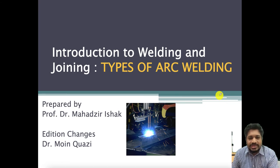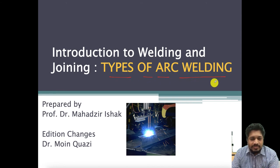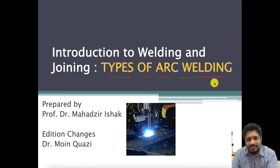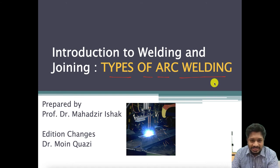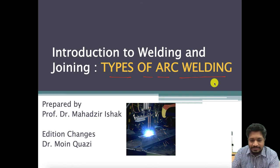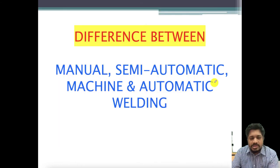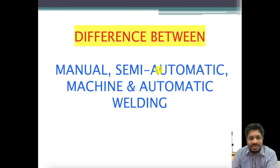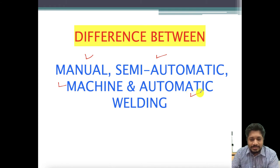Hello students. Today we are going to start a new topic: types of arc welding. We will discuss the different types of fusion arc welding available, and later on we will also discuss the types of specialized welding processes categorized by AWS, the American Welding Society. Before we move on to the types of welding, it is important for us to know what is manual, semi-automatic, machine, and automatic welding.